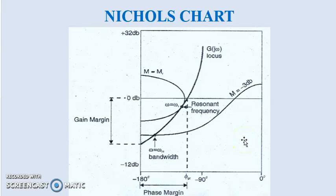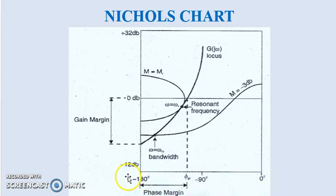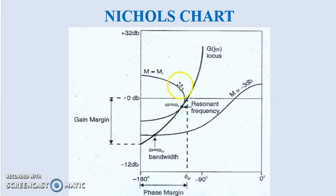This represents the Nichols chart. The y-axis shows the magnitude in decibels (e.g., 0 dB, −12 dB, +32 dB), and the x-axis represents the phase in degrees (e.g., 0°, −90°, −180°). The G(jω) locus is shown along with the M contours. The maximum magnitude contour corresponds to M = M_R, and the frequency at which the G(jω) locus intersects this M_R contour is your Resonant Frequency ω_r.